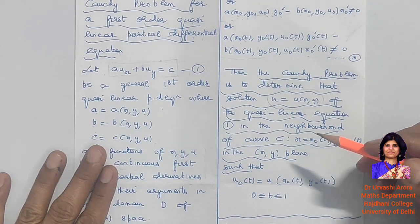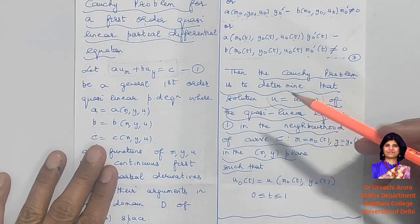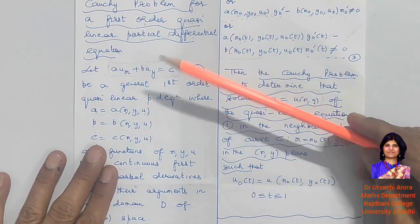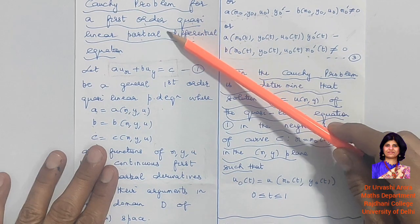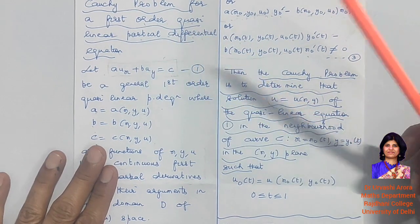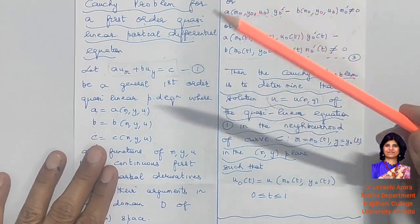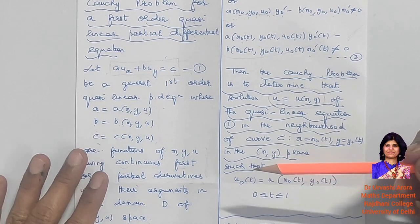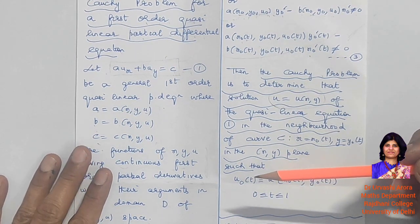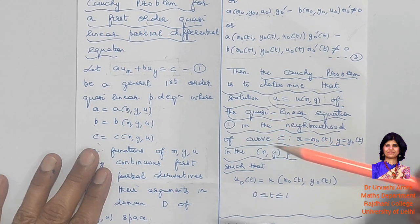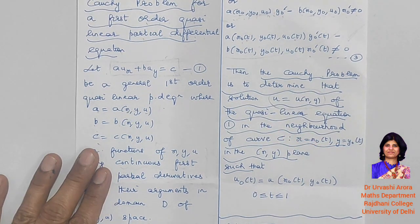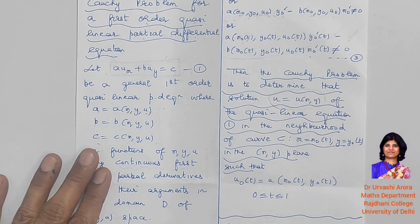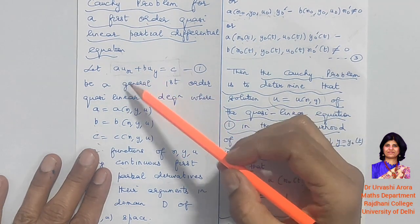Hello students. In this video lecture, I am going to discuss the Cauchy problem for a first-order quasi-linear partial differential equation. In my earlier video, I have already discussed theoretically what is the Cauchy problem for a general first-order partial differential equation. In this particular video, we are going to discuss the Cauchy problem specifically for a first-order quasi-linear partial differential equation.